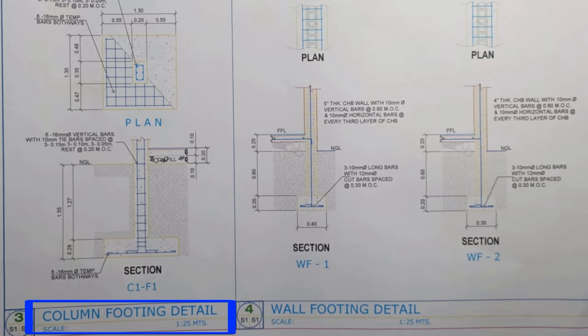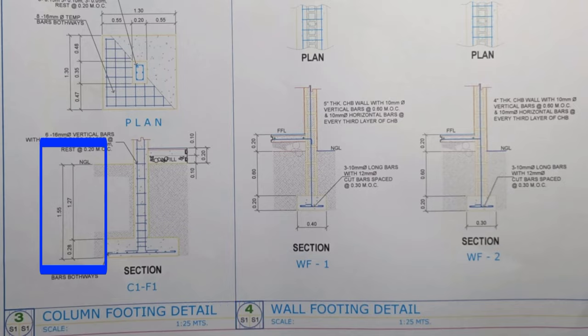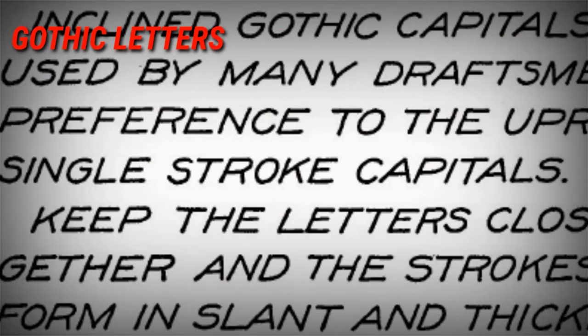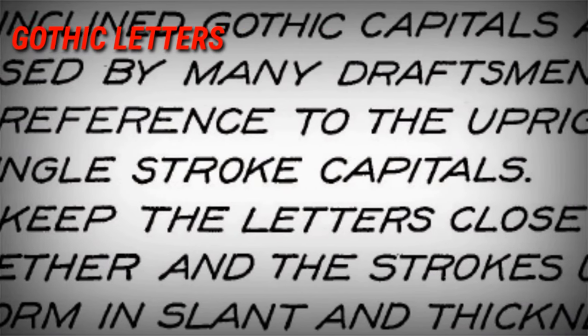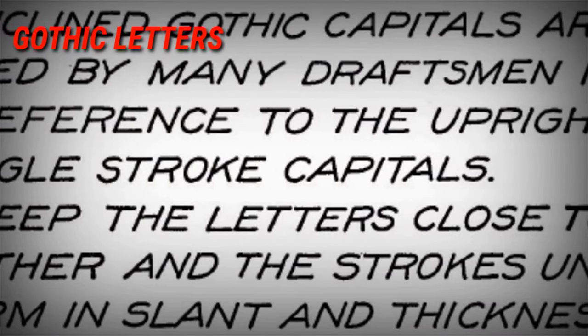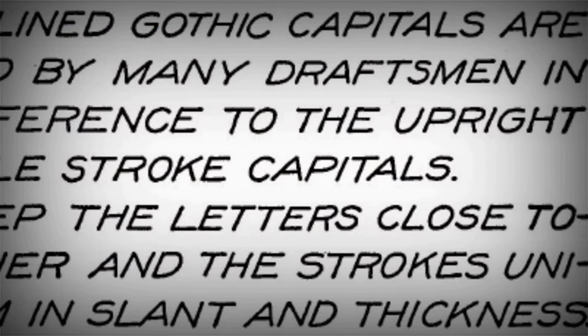In architectural or mechanical drawing, lettering is defined as the writing of titles, subtitles, dimensions, and so on. There are four groups of letters from the simplest to the most complex. Gothic letters is the simplest and most readable among the four. It is a particular font for engineering drawing — a single stroke, sans serif letter.